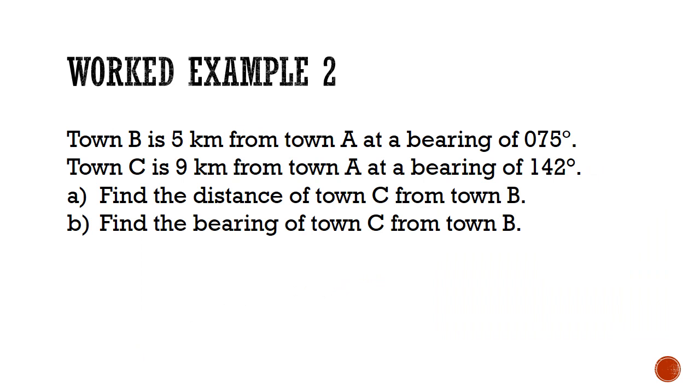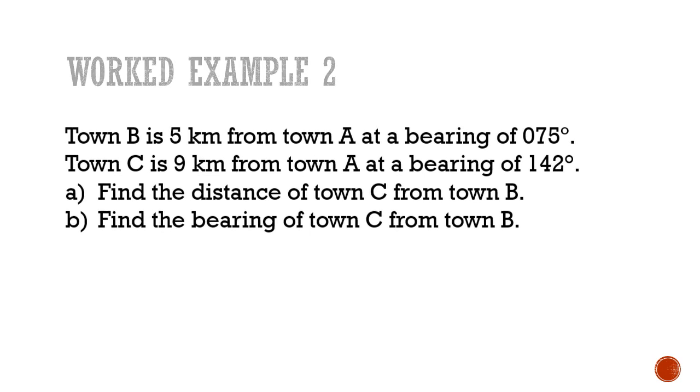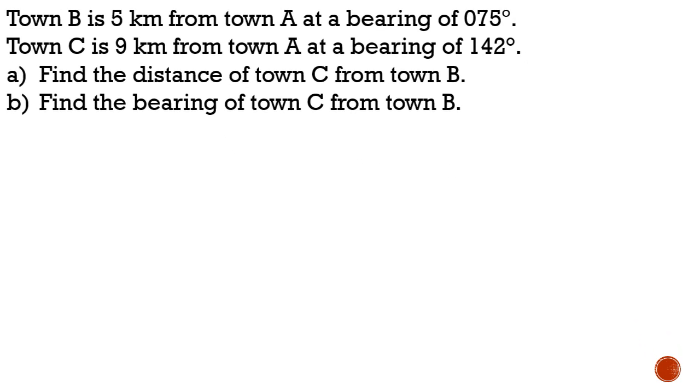Let's move on to work example 2. Given that town B is 5km from town A at a bearing of 075 degrees, and town C is 9km from town A at a bearing of 142 degrees, a) find the distance of town C from town B, and b) find the bearing of town C from town B. Let's do this together. We're going to need a bit of space for this one, so we're going to shift the question to the top left.